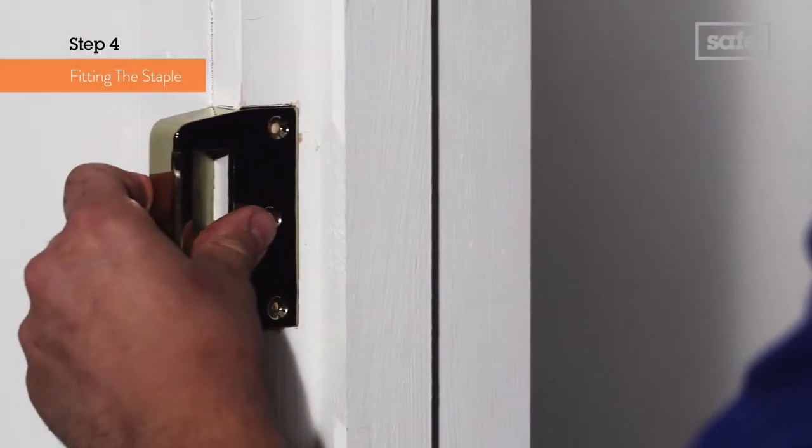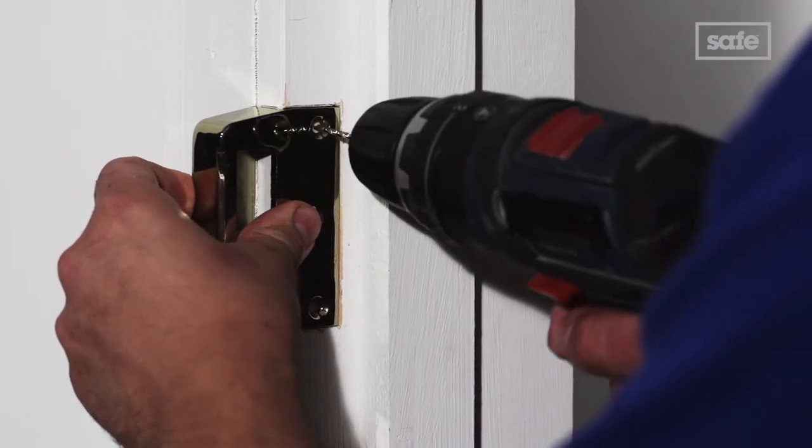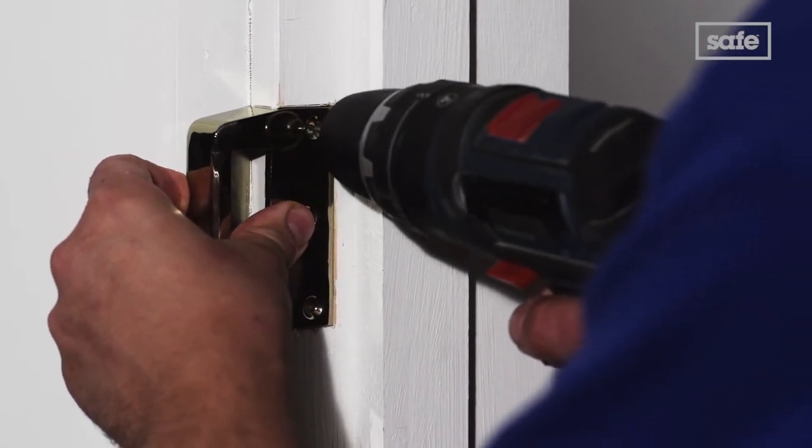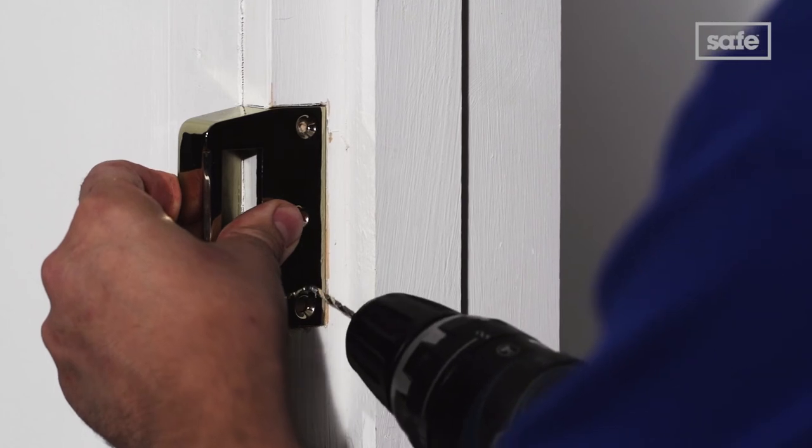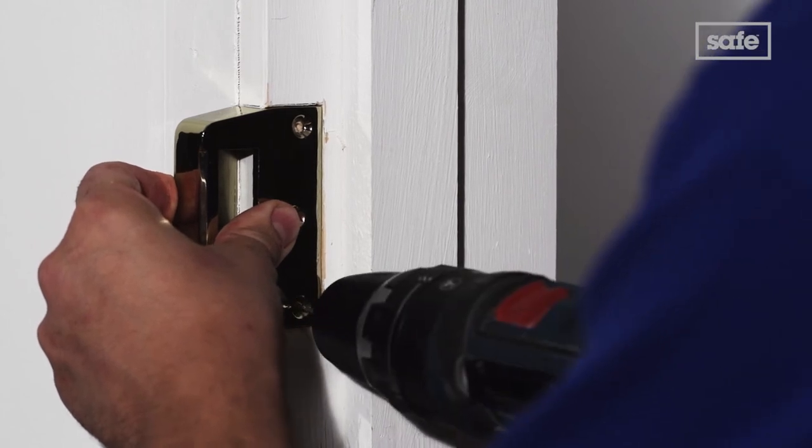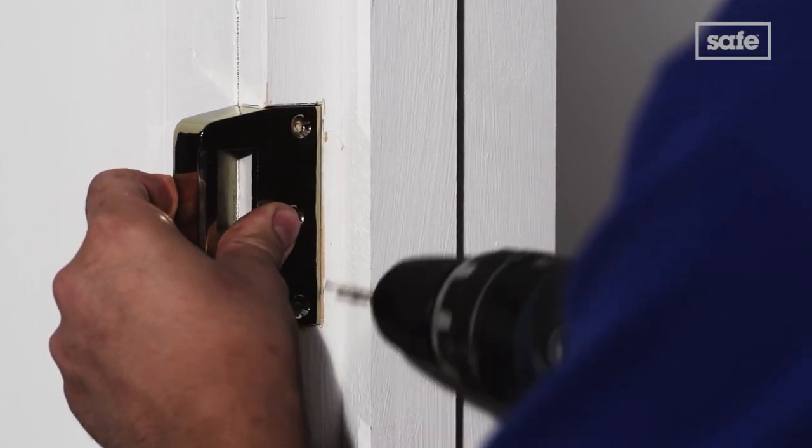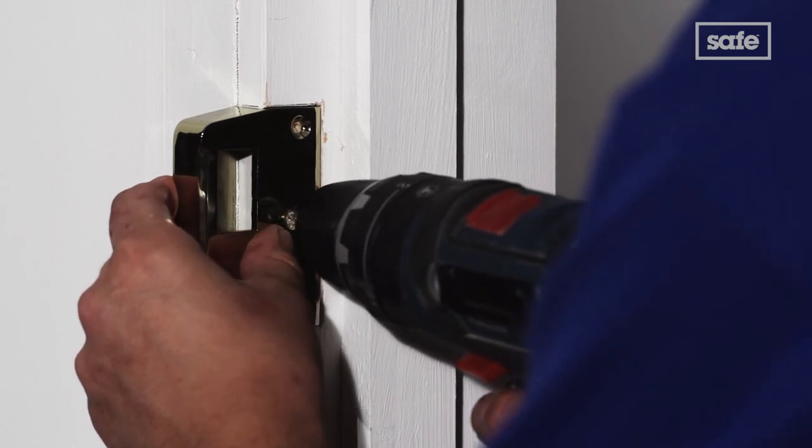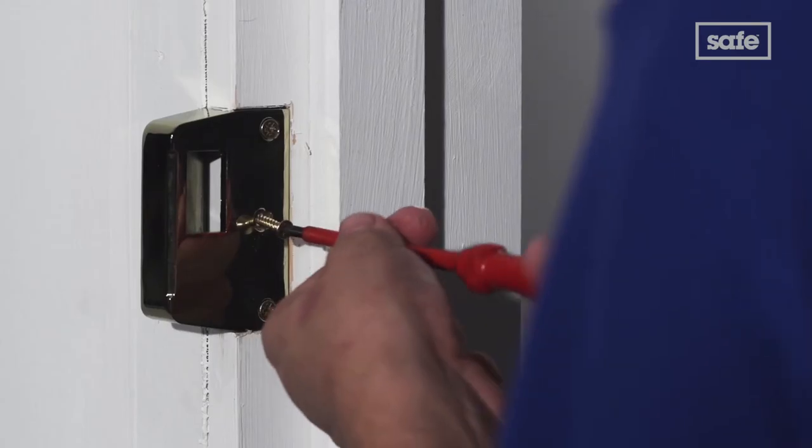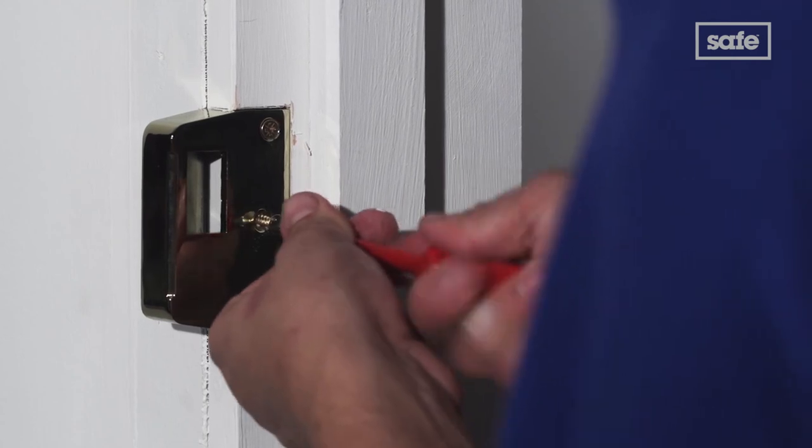When the recess is done, put the staple in place and check it sits flush with the door frame. If it is, use a small drill bit to pre-drill some pilot holes for your screws. Pre-drilling will help avoid splitting the wood. Then fix the staple in place with the screws.